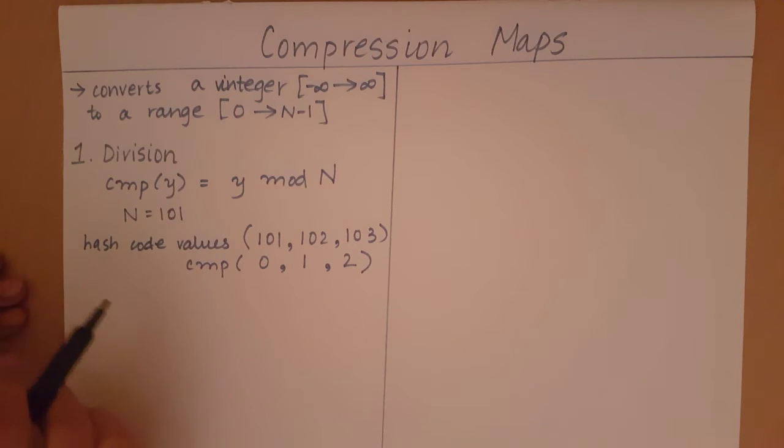Now the disadvantage of this method is that collisions, even if n is chosen as a prime number, can still occur quite frequently.